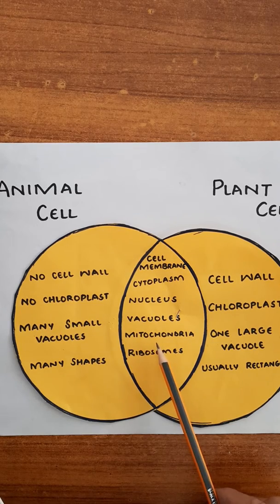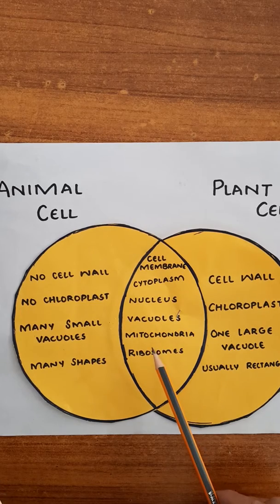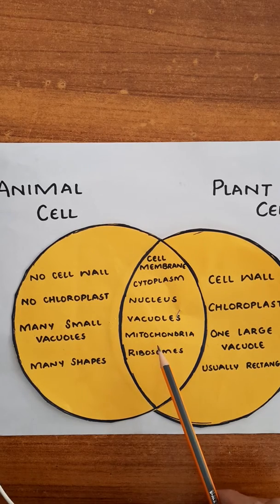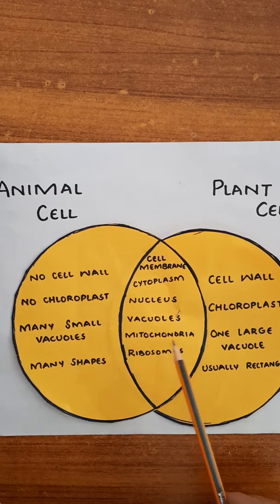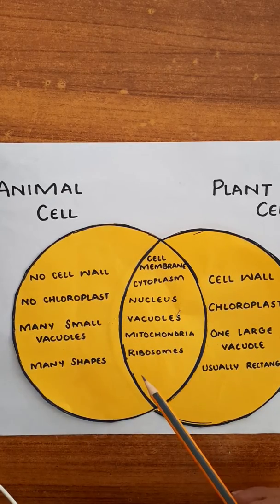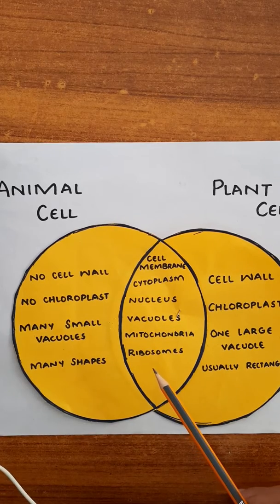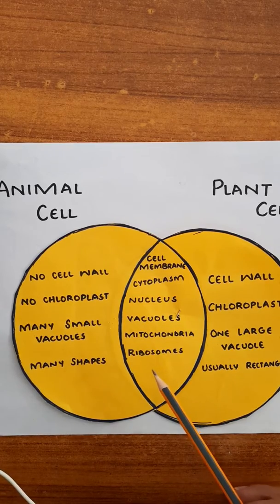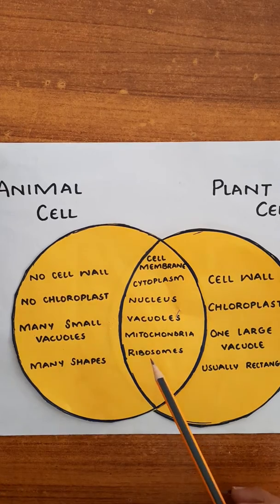Mitochondria are present in both plant and animal cells. Mitochondria are the powerhouse of the cell — it is called the powerhouse because energy is produced there. Then we have ribosomes. Ribosomes are the site where proteins — a very important nutrient of our body — are synthesized.